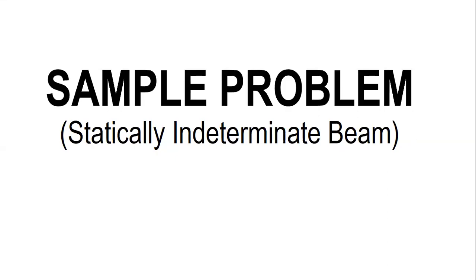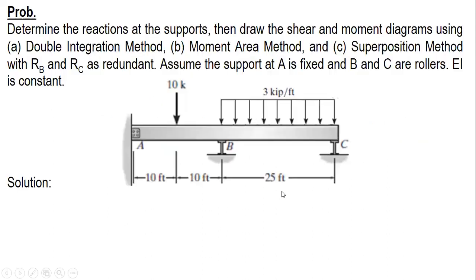I'm going to solve a sample problem on statically indeterminate beams having two redundants. The problem: determine the reactions at the supports, then draw the shear and moment diagrams using the double integration method, moment area method, and superposition method with RB and RC as redundants. Assume the support at A is fixed and B and C are rollers. EI is constant.